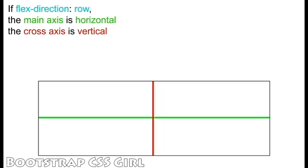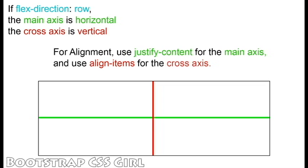By default, FlexDirection is set to Row, which has a horizontal main axis starting at the left and going to the right, and a vertical cross axis which starts at the top and goes to the bottom. The cross axis is perpendicular to the main axis. Remember that we use JustifyContent to align FlexItems along the main axis, and AlignItems to align FlexItems along the cross axis.